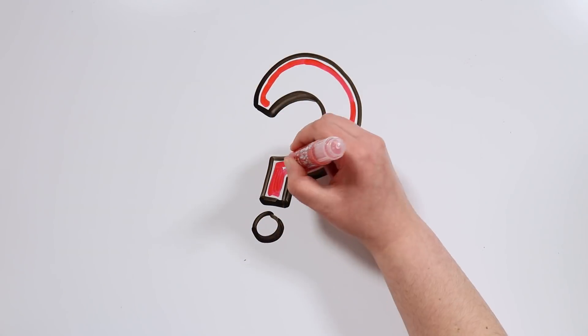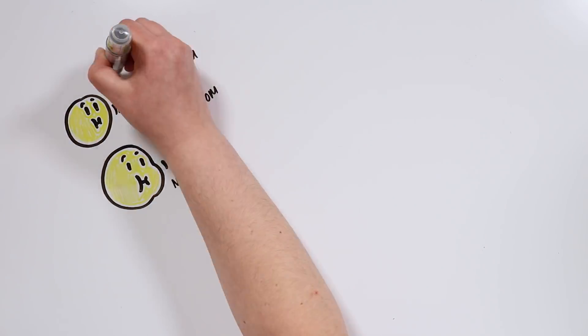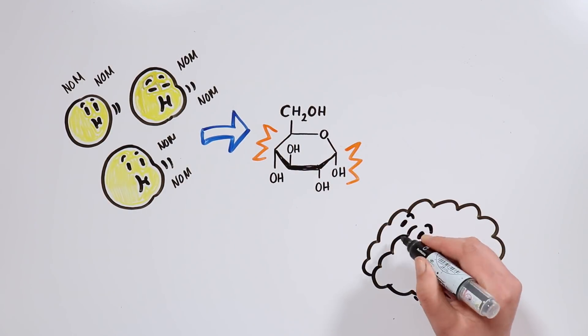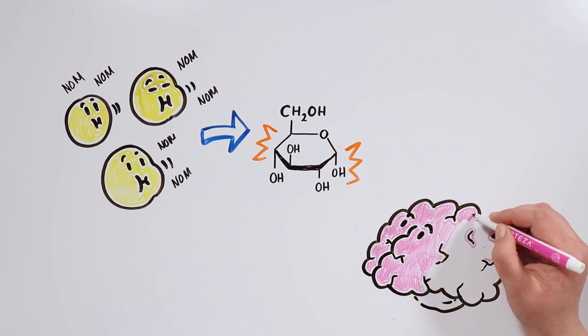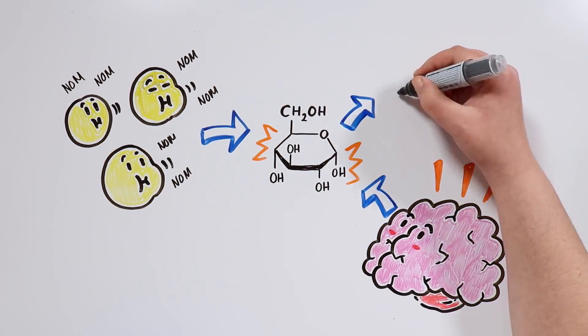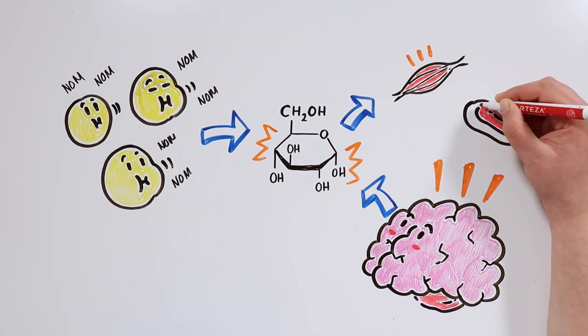However, what exactly happens when we stop eating? Well, the main source of energy of our cells is glucose. More specifically, our brain consumes a fourth of it, and the rest is distributed between our muscle tissues and red blood cells.